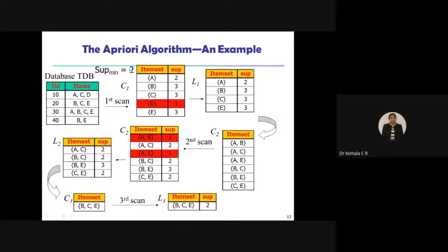So what will I do with this? I will ignore elements appearing below the threshold. Whichever element appears two times or more, only I will consider. Since D is appearing less than the threshold value — only one time — I will remove it. This is the pruning principle: remove the infrequent item. So I remove D. What is left for L1? A, B, C, and E, which appear at least twice — meeting minimum support of two.